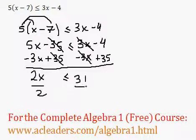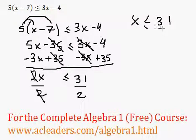Then, we can divide both sides by 2. So x is going to be smaller or equal to 31 over 2.